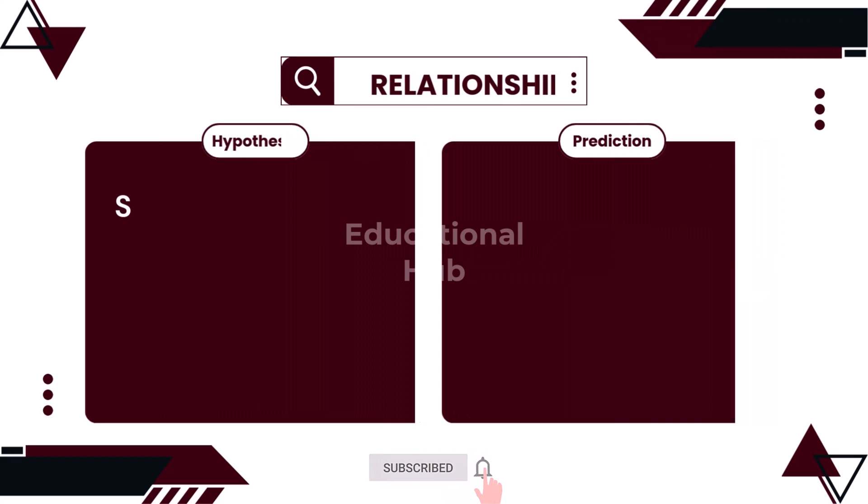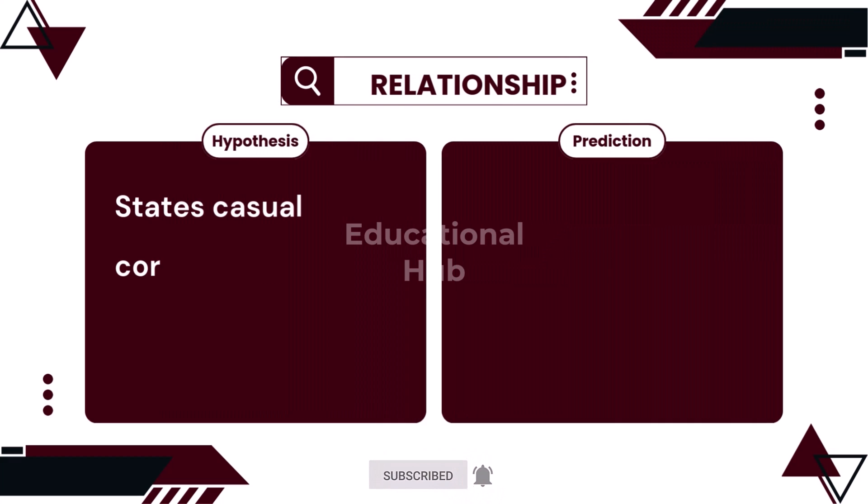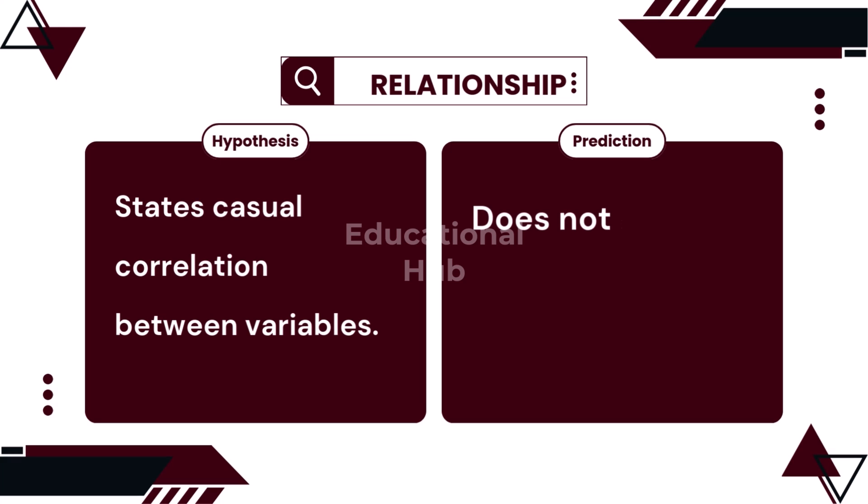8. The hypothesis states the relationship between independent variable and the dependent variable. On the other hand, prediction does not state any relationship between variables.